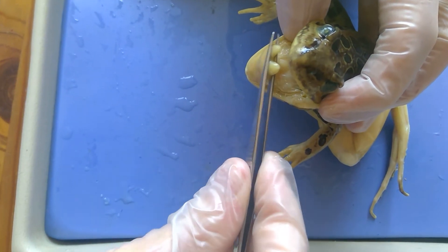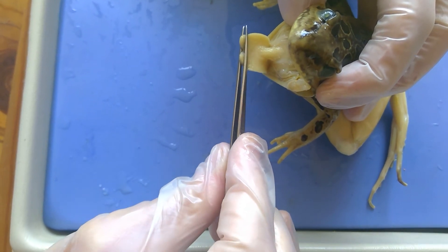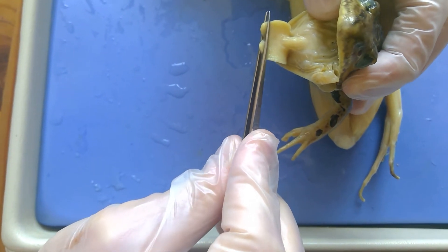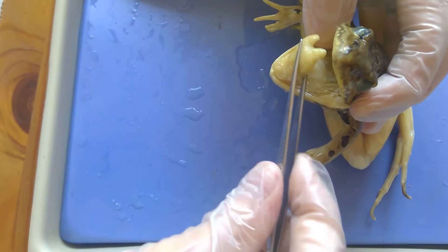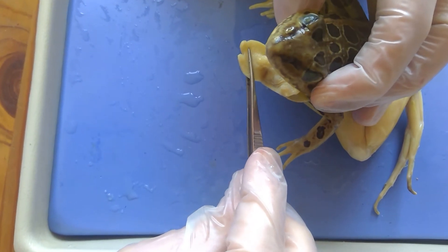And actually these little fingers right here actually grab onto the food and then bring it back into its mouth. So that's how it's using its tongue. It's whipping down and back.